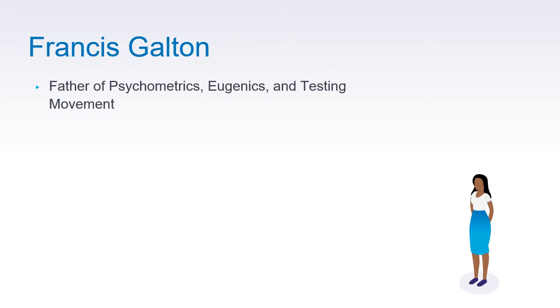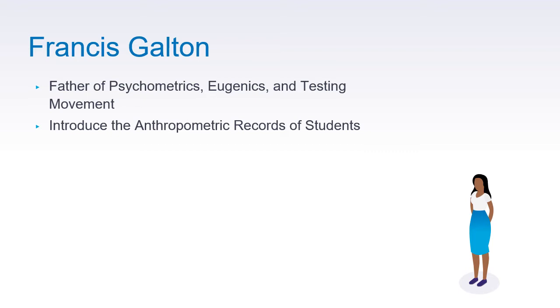As you may remember from the last lecture, Francis Galton is the father of psychometrics, eugenics, and the testing movement. He introduced the anthropometric records of students, which is a series of quantitative measurements of muscle, bone, and adipose tissue used to assess body composition. The core elements of anthropometry are height, weight, body mass index, body circumference — the waist, the hip, and the limbs — and skinfold thickness.